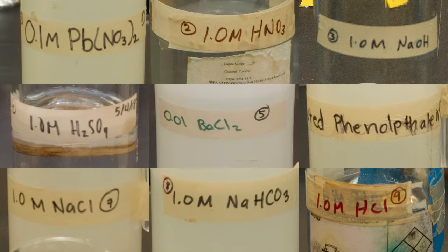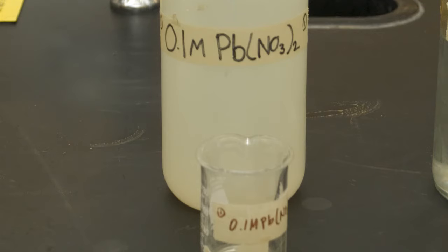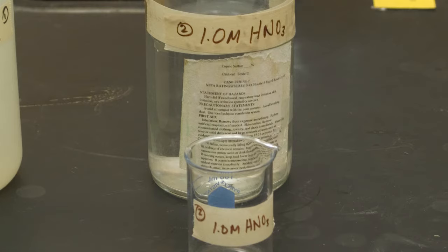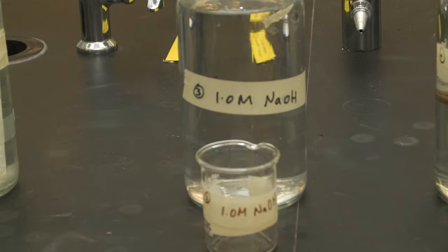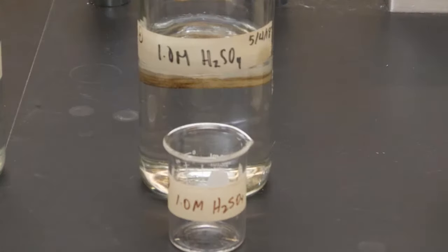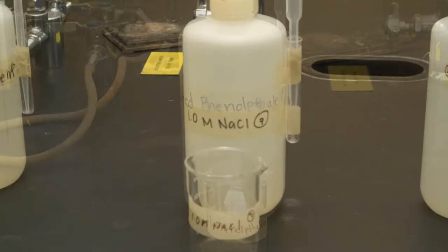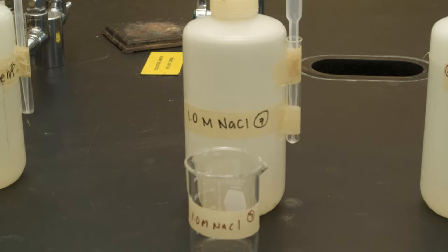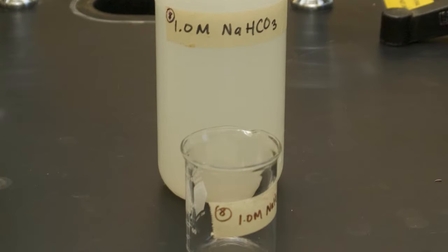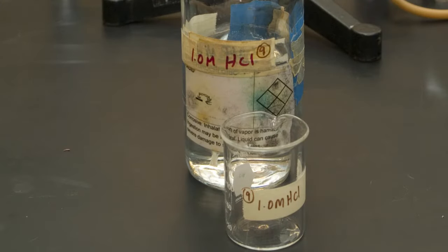These are the nine solutions we use in this demo. Your solutions may vary. One: 0.10 molar lead nitrate. Two: 1.0 molar nitric acid. Three: 1.0 molar sodium hydroxide. Four: 1.0 molar sulfuric acid. Five: 0.010 molar barium chloride. Six: phenolphthalein. Seven: 1.0 molar sodium chloride. Eight: 1.0 molar sodium bicarbonate. Nine: 1.0 molar hydrochloric acid.